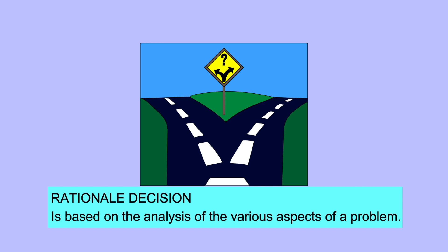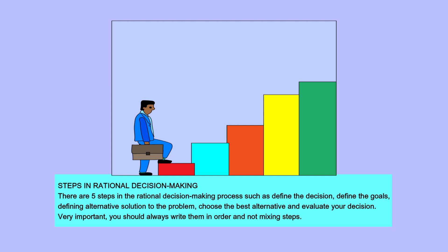A rational decision is based on the analysis of the various aspects of a problem. There are five steps in the rational decision making process: define the decision, define the goals, define the alternative solution to the problem, choose the best alternative, and evaluate your decision. Always write them in order and do not mix the steps.